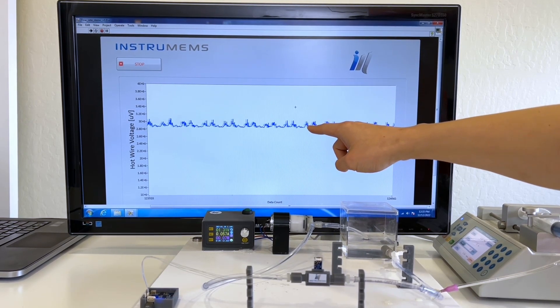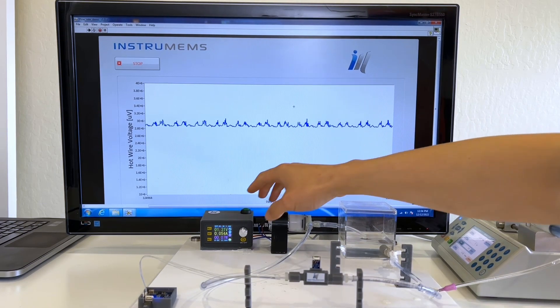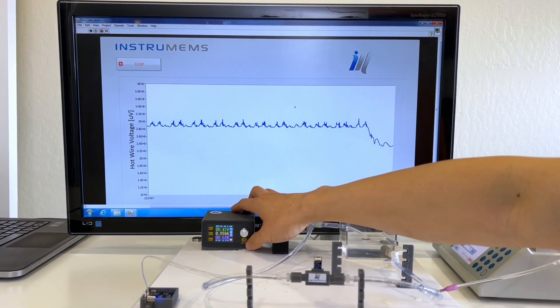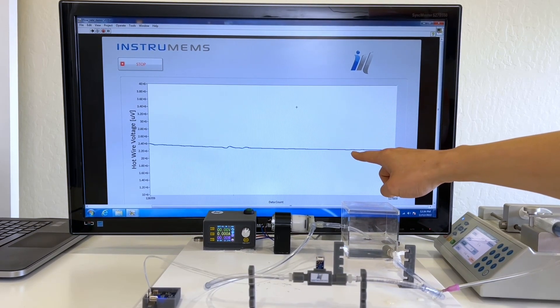The design of the sensor allows users to accurately measure at low flow rates. Turning off the pump, the signal cleans up and falls to the no-flow level.